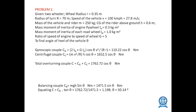We are going to solve some problems for the gyroscopic couple in a two-wheeler. Given: wheel radius = 0.5 m, radius of turn = 70 m, speed of the vehicle = 100 km/h (i.e., 27.8 m/s), mass of the rider = 250 kg, center of gravity = 0.6 m, mass moment of inertia = 0.3, and for the road wheel = 1.0. Find the angle of heel of the vehicle, theta.